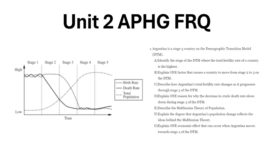Hey everyone, welcome back to another video. Today we're going to do a Unit 2 FRQ for AP Human Geography on the Demographic Transition Model. If you'd like to do this FRQ before I go over the answers, the link to the document is in the description down below. You can spend some time to respond to the questions using your own knowledge and then come back and review them. But if you just want to review the content or you've done the FRQ already, let's go through this.